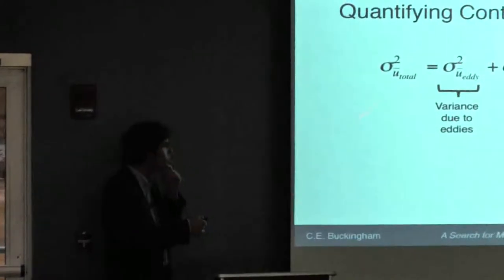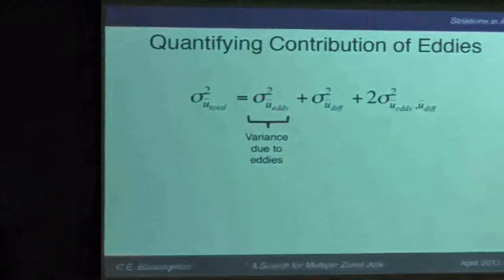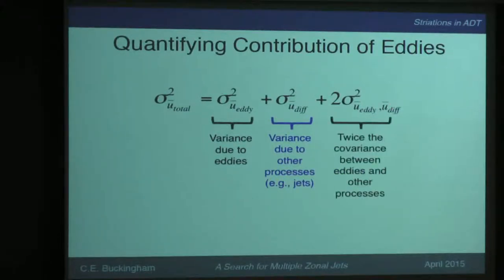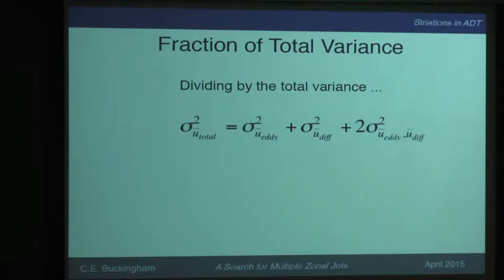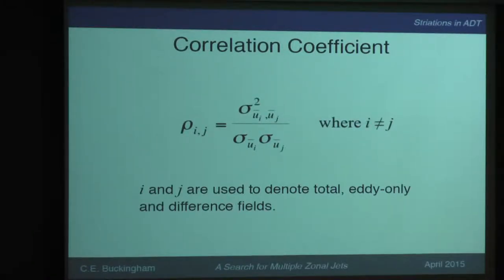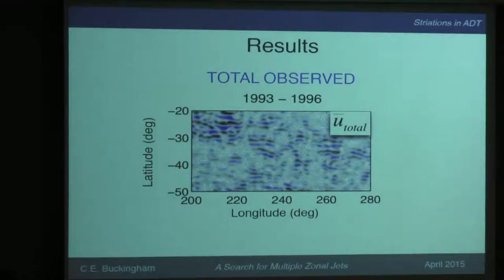This is the variance due to the eddies. The total variance of the field is the sum of the eddy variance plus something due to other processes — which may include jets — plus twice the covariance between the eddies and other processes. You need this term because there's actually some correlation between the eddies and the other things. You divide by the total to get a fractional variance, and then we also compute the correlation coefficient, where the subscripts refer to total, eddy-only, and difference.